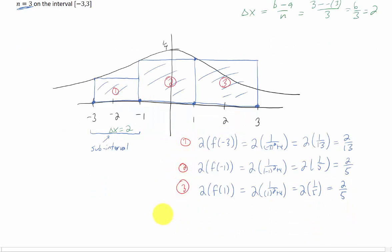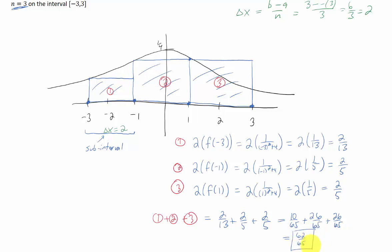Now, our Riemann sum is just 1 plus 2 plus 3. And do we want to find a common denominator here? Well, I guess we can. It would be 65. If we add all this up, we are getting 62 65ths. And that is going to be the answer.